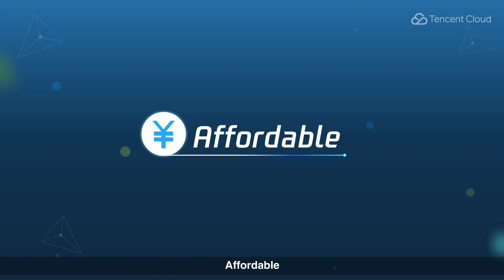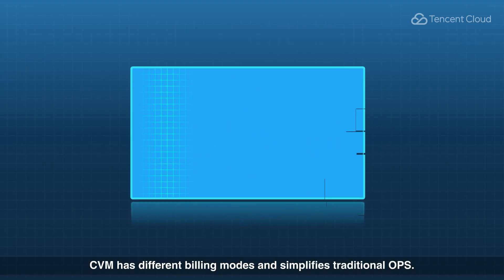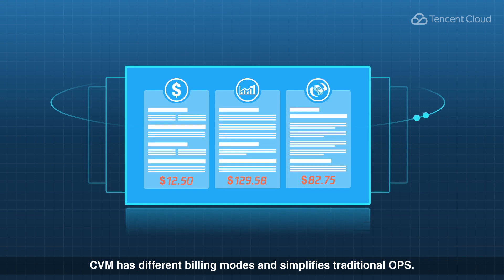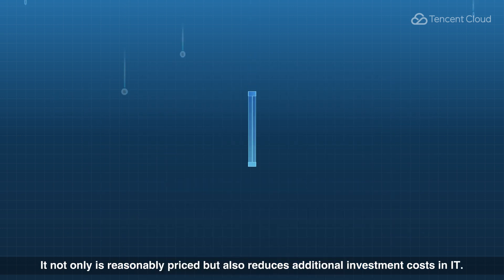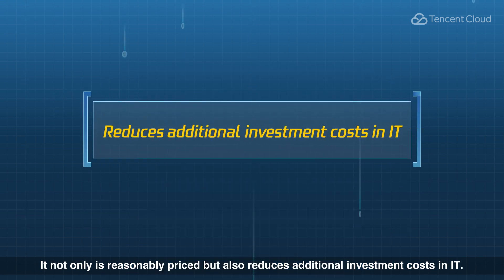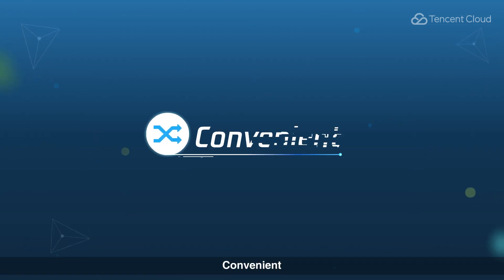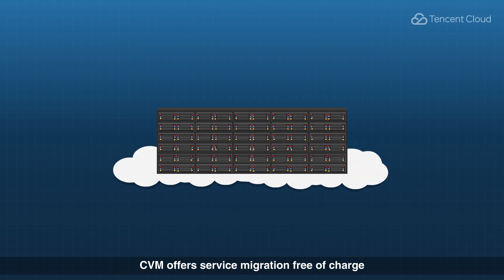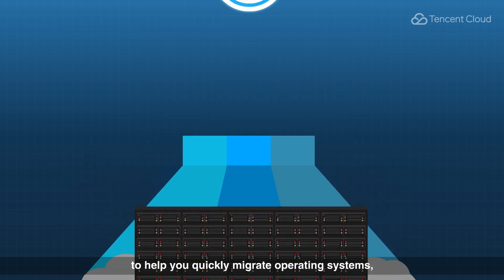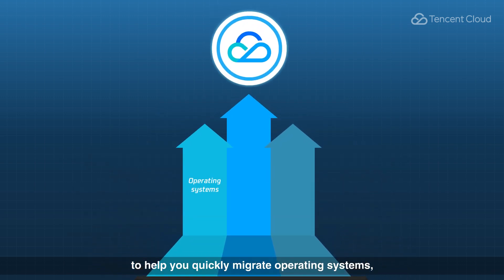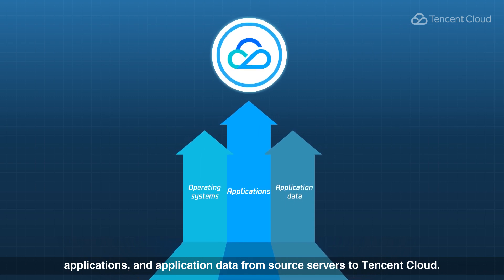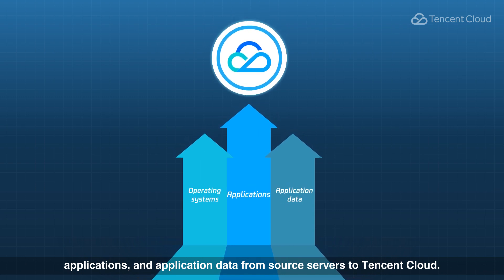Affordable: CVM has different billing modes and simplifies traditional OPS. It not only is reasonably priced but also reduces additional investment costs in IT. Convenient: CVM offers service migration free of charge to help you quickly migrate operating systems, applications and application data from source servers to Tencent Cloud.